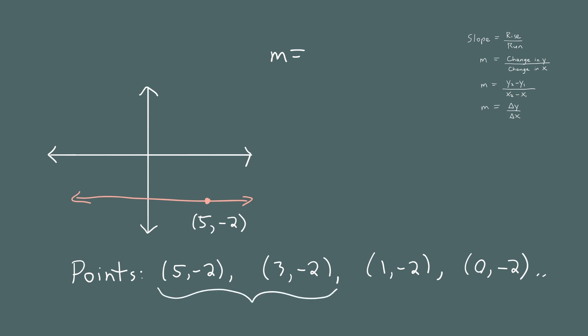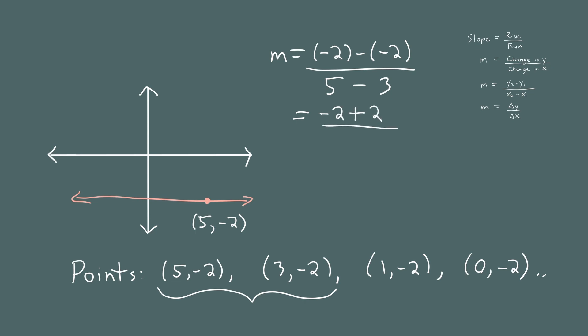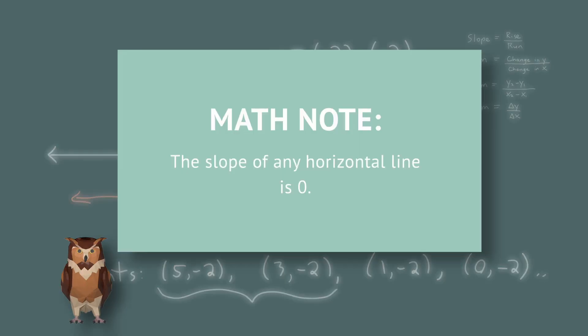Using the points (5, -2) and (3, -2), the slope is the rise over the run: (-2) minus (-2), divided by 5 minus 3. Now, -2 minus (-2) is the same as -2 plus 2, which equals 0, and 5 minus 3 is 2. So this gives us 0 divided by 2, which is 0. The slope of any horizontal line is 0.